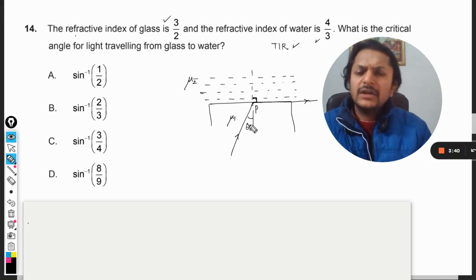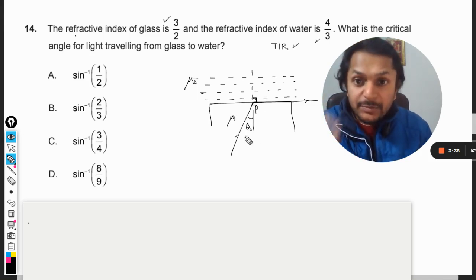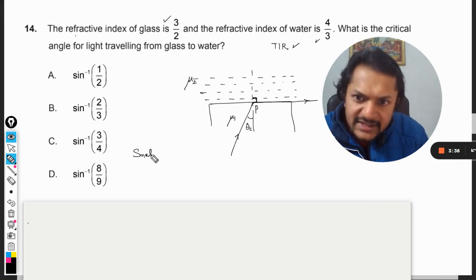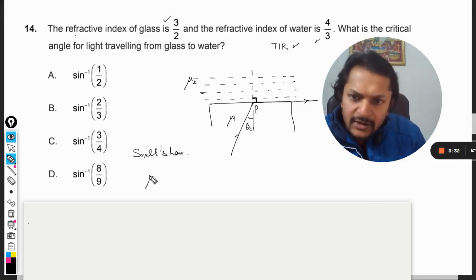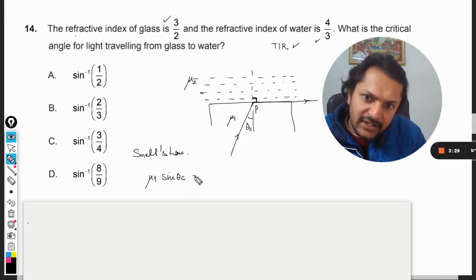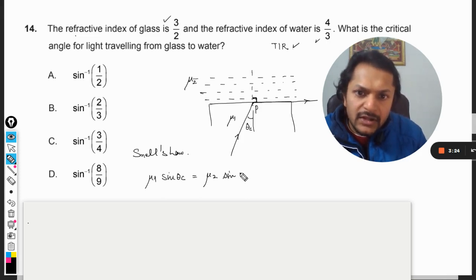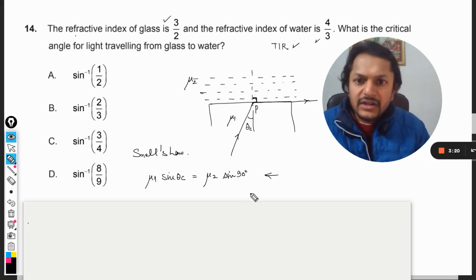So I am just applying Snell's law at the point P and what is Snell's law? That is mu 1 sine theta critical is equal to mu 2 sine 90 degrees because that is what is the definition of theta critical.